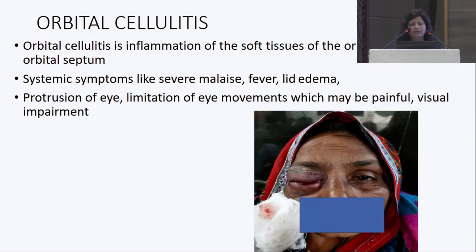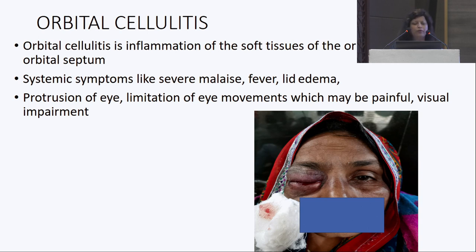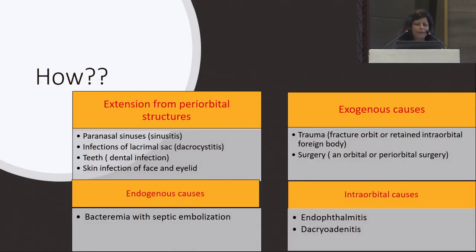As it progresses, orbital cellulitis develops — inflammation of the soft tissues of the orbit posterior to the orbital septum. Systemic symptoms — fever, malaise, lid edema — are more common, often with extensive proptosis, limitation of eye movements which may be painful, and visual impairment.